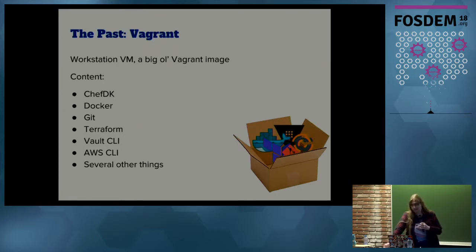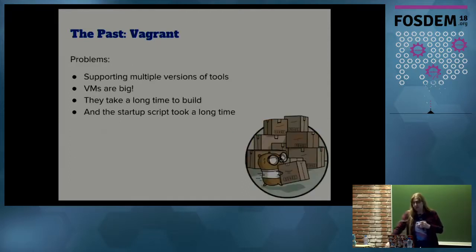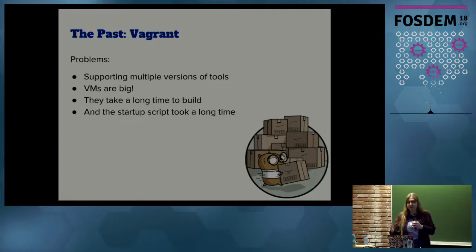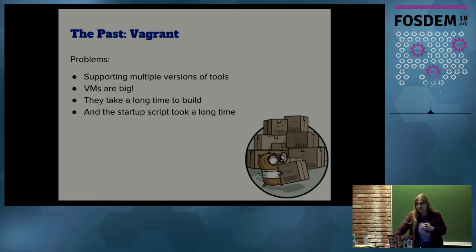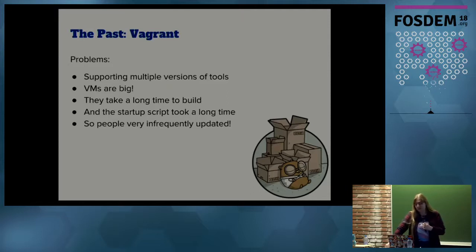Our initial solution was a Vagrant image that contains a bunch of stuff. That worked for a while, but as the company grew bigger, that wasn't really a sustainable solution. Teams across the company are semi-autonomous, and while they might use the same tools, they don't necessarily use the same versions, which meant potentially different versions of VMs for different teams. These things are fairly big, which annoys developers when they have to download a new one, and they take a long time to build. The biggest problem was that it took ages to start up and for developers to update, which basically meant that they didn't. A lot of the issues they saw were due to having old versions and not having the same version on their laptops as on CI.